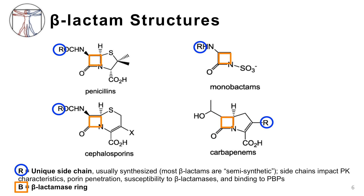This figure provides the basic chemical structures of the four main subclasses of beta-lactams: the penicillins, the monobactams, the cephalosporins, and the carbapenems. Every beta-lactam contains the core beta-lactam ring, denoted by the orange squares. The blue circles show each structure's unique side chain, contributing to pharmacokinetic characteristics, outer bacterial membrane porin penetration, susceptibility to beta-lactamase enzymes, and binding to specific penicillin binding proteins, or PBPs, among other characteristics.